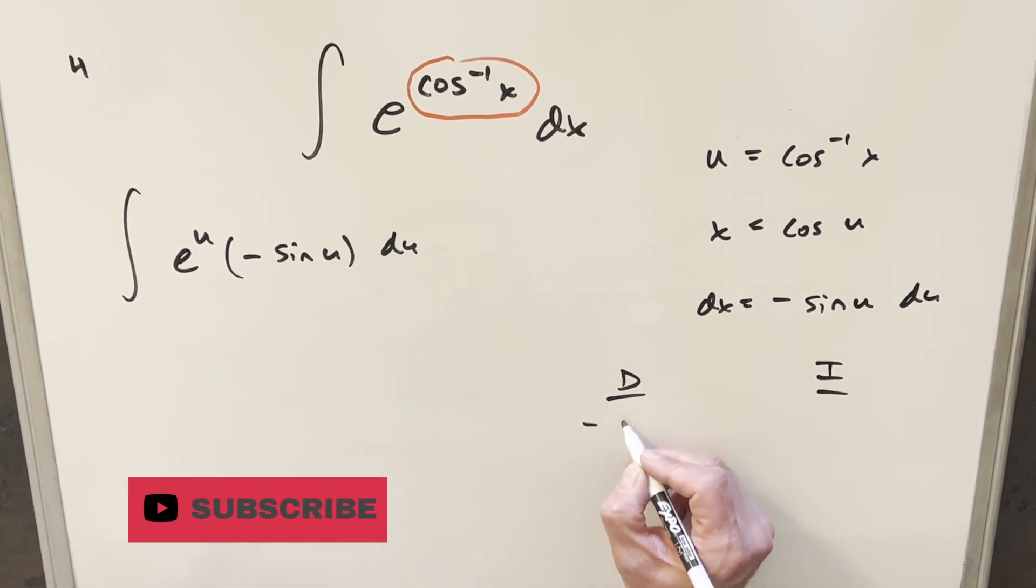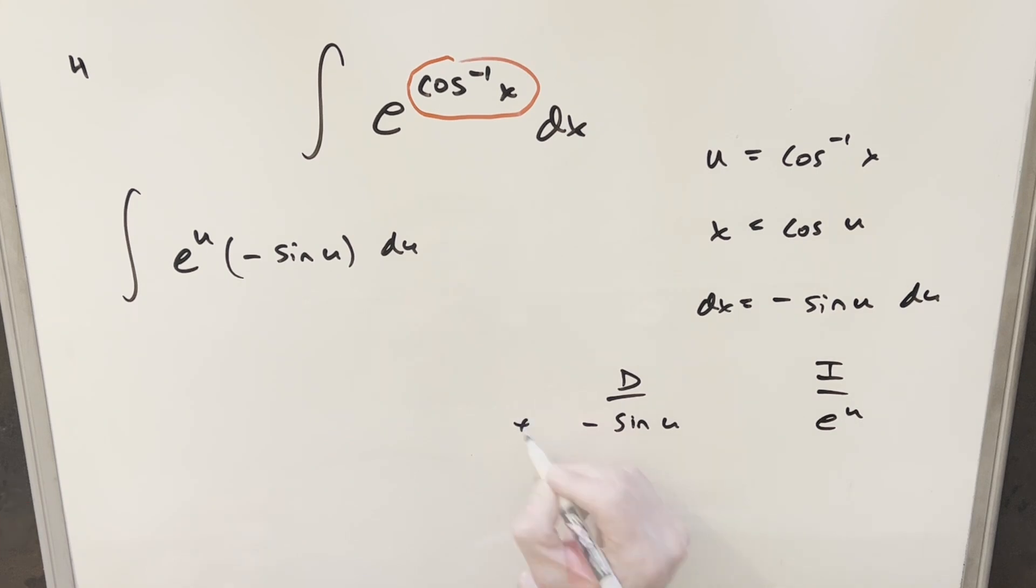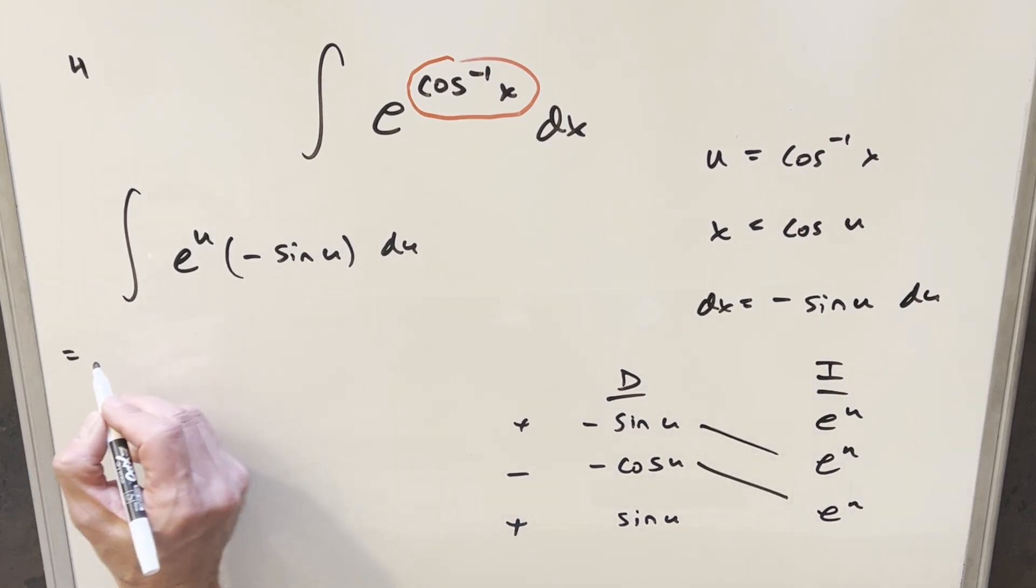So let's differentiate minus sine u, and I'll integrate e to the u. Taking derivatives here, the derivative of minus sine u is going to be minus cosine u. Then one more time, if I differentiate here, the derivative of cosine u is going to be minus sine u times minus, this is going to become a plus sine u. And then over here, the integral of e to the u is just going to be e to the u, and we'll just do it one more time.